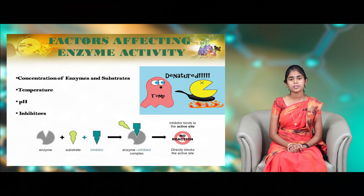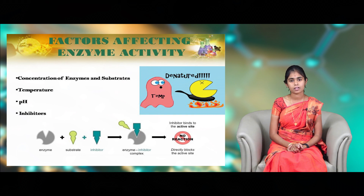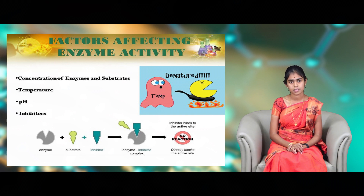There are several factors that affect enzyme activity. We are going to see a few factors like substrate concentration, pH, temperature, and inhibitors. An increase in substrate concentration increases the rate of reaction. However, further increase in substrate concentration causes no further reaction change because all the active sites are full and there is no chance for further attachment of substrates.